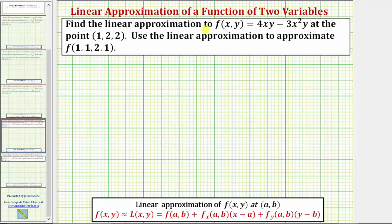We're asked to find the linear approximation to f(x,y) = 4xy - 3x²y at the point (1, 2, 2), then use the linear approximation to approximate the function value f(1.1, 2.1).